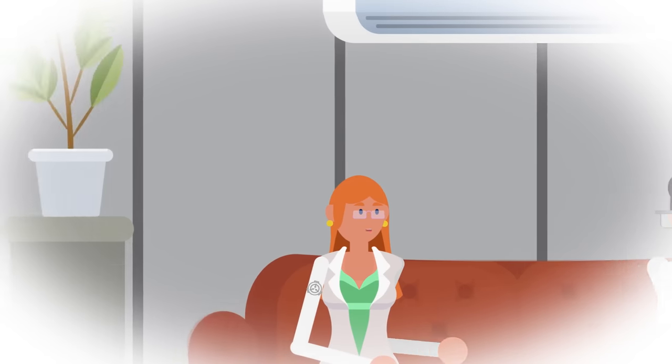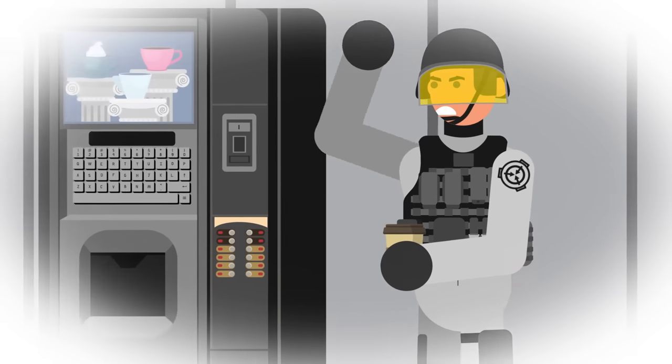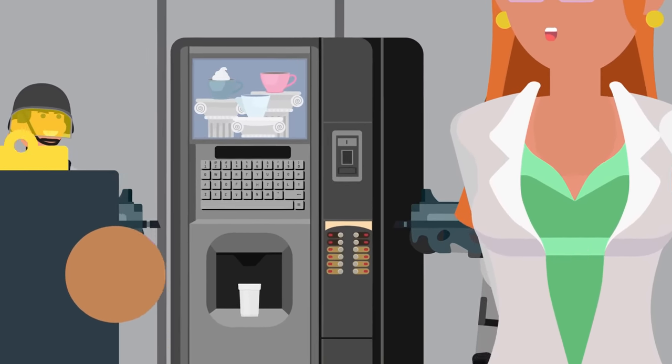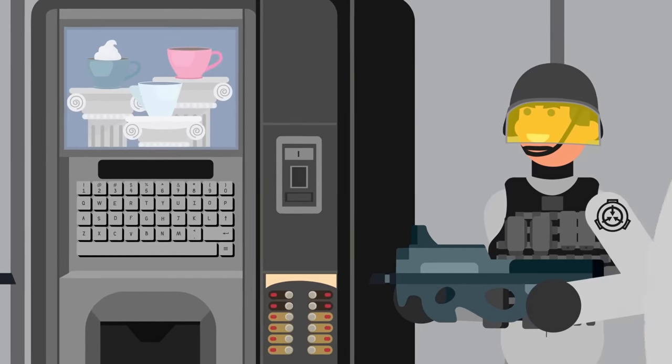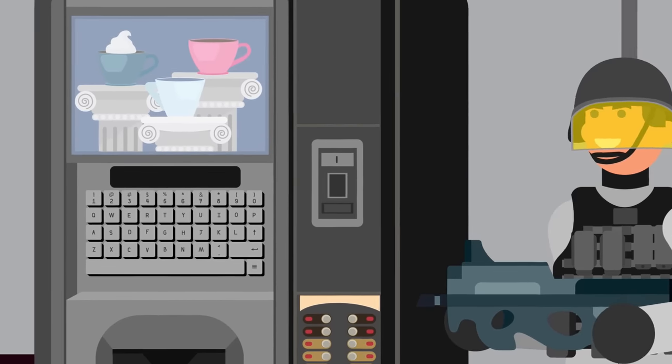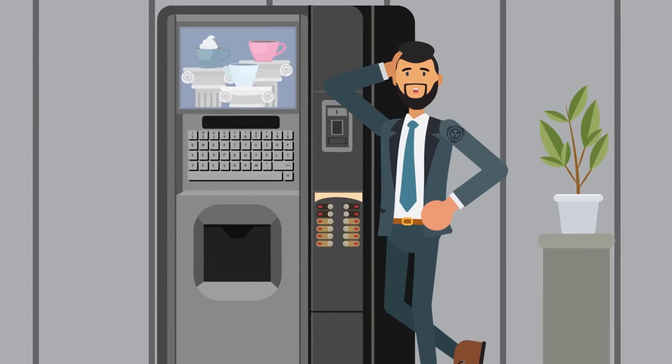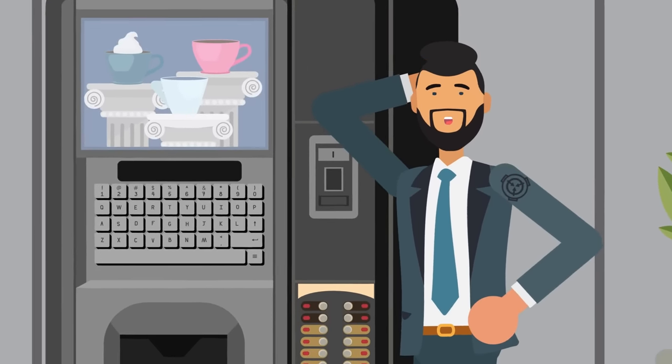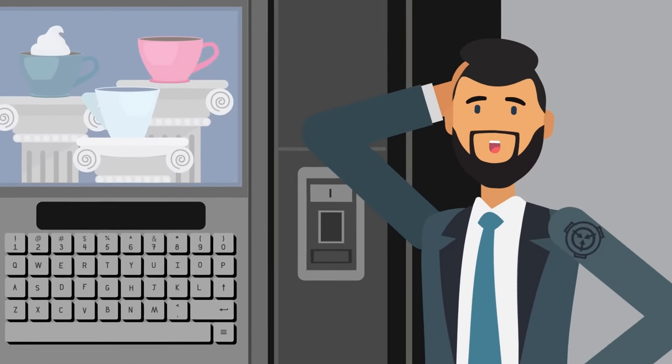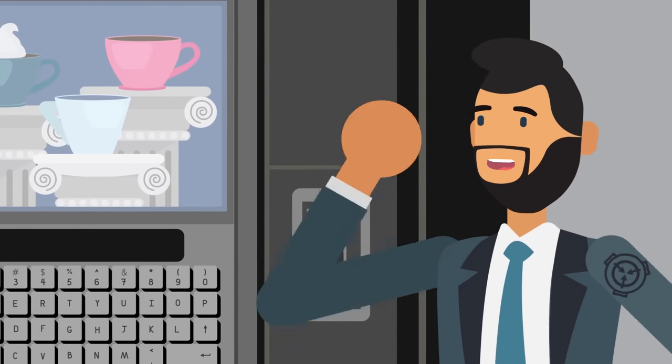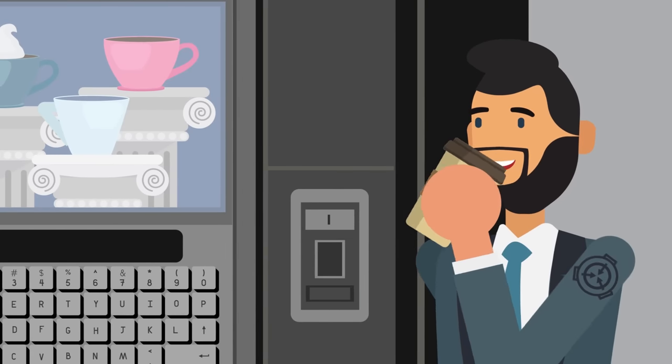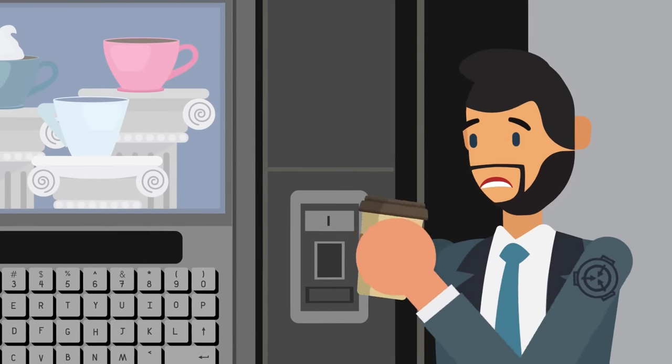SCP-294 initially just seemed like a boring magic vending machine, but it was only after the extensive experimentation that you just saw a shortened log of that the SCP Foundation was able to discern its true nature. It wasn't an unthinking object. It was sentient, intelligent, and even a little sarcastic, though none of that stopped it from doing its job, providing people with a hot cup of whatever they needed to drink. Just make sure you type in your request very carefully.